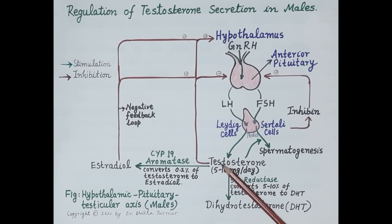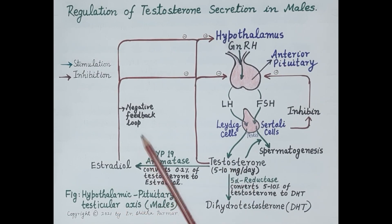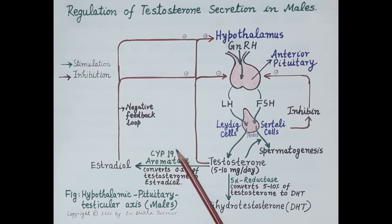So this is how the levels of testosterone are regulated by the hypothalamic-pituitary-testicular axis and the negative feedback loop. If you find the video useful, please like, subscribe, and share. Thanks for watching.